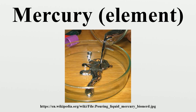Upon freezing, the volume of mercury decreases by 3.59% and its density changes from 13.69 g/cc when liquid to 14.184 g/cc when solid. The coefficient of volume expansion is 181.59 × 10⁻⁶ at 0°C, 181.71 × 10⁻⁶ at 20°C and 182.50 × 10⁻⁶ at 100°C.